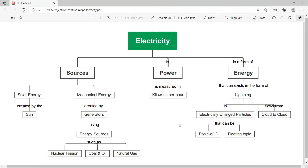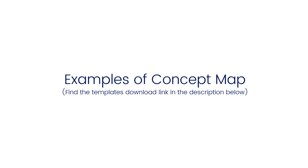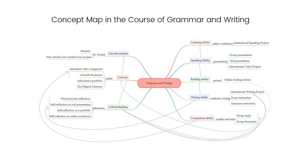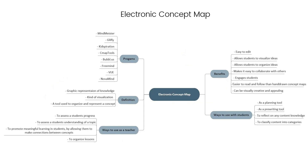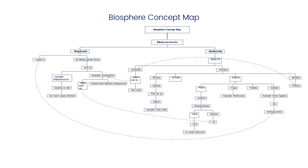This concept map example decodes the idea of electricity. It defines key fundamentals of electricity and also takes a step beyond electricity to explore the various sources of energy. Now let's see a few examples of concept maps. Here's a concept map in a course on grammar and writing, this is an electronic concept map, and here's a biosphere concept map.